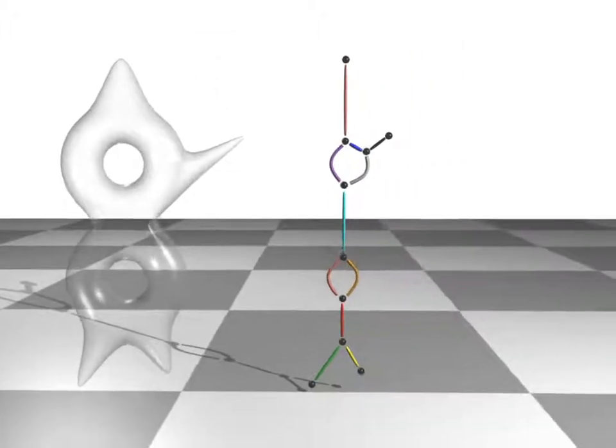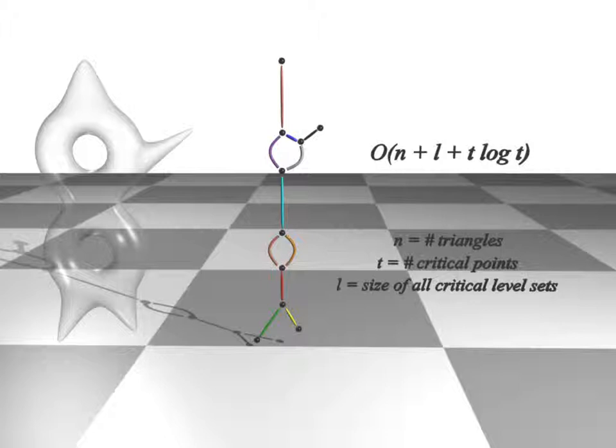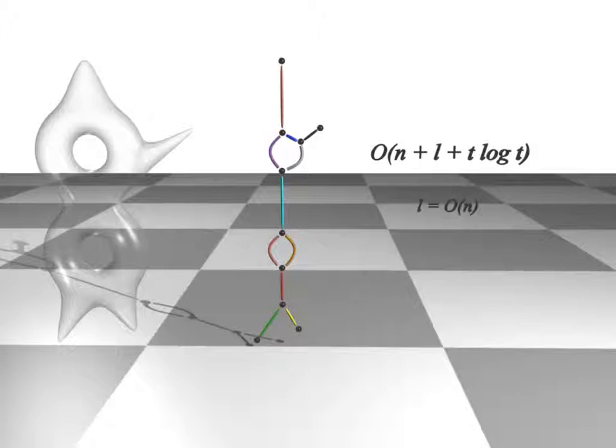Our algorithm has a running time of the order of n plus l plus t log t where n is the number of triangles in the input mesh, t is the number of critical points and l is the size of all critical level sets. We have noticed that l is usually order of n in practice. So the running time in practice is close to the optimal bound of O of n plus t log t.